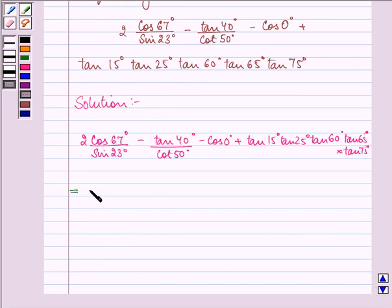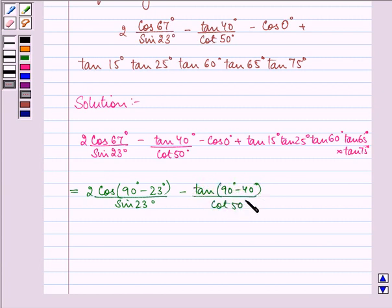Now here we can write cos 67° as cos(90° - 23°), right? Similarly here we can write tan 40° as tan(90° - 50°) upon cot 50°